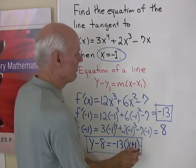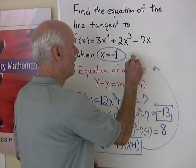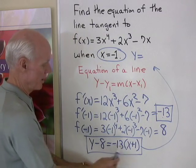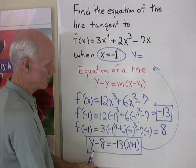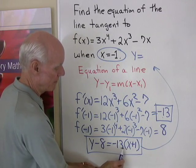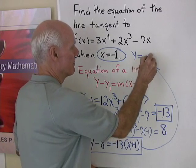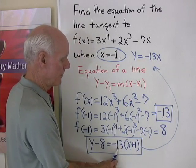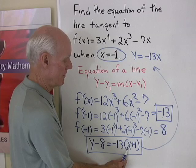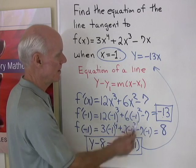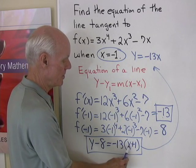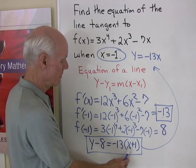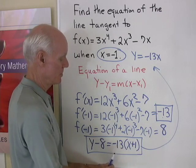Let's go to slope-intercept form. y is going to be equal to — I'm going to add 8 to both sides. Over here I'll have negative 13 times x, which is negative 13x. Negative 13 times x is negative 13x, and then negative 13 times positive 1 is going to be negative 13.